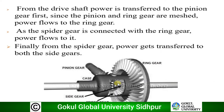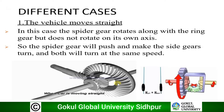Now let's see the different cases — what happens when the vehicle takes a right turn, left turn, and moves straight. Case 1: when the vehicle moves straight, both right and left wheels travel the same distance, so the same speed is required. Input torque is applied to the ring gear, shown in blue, which turns the entire carrier.